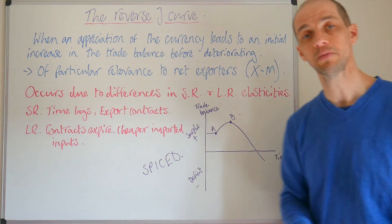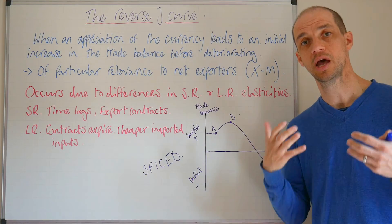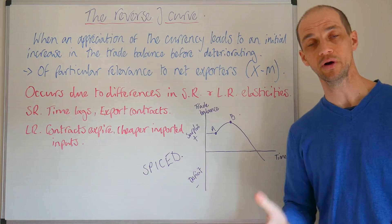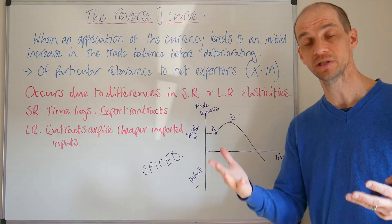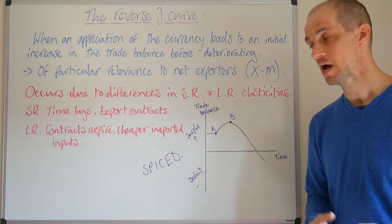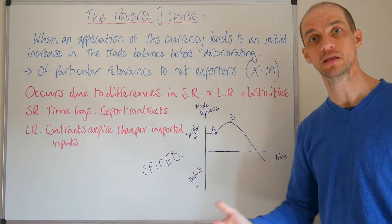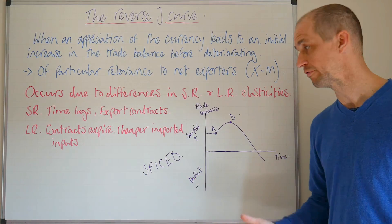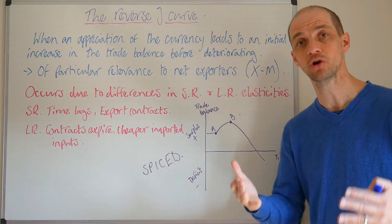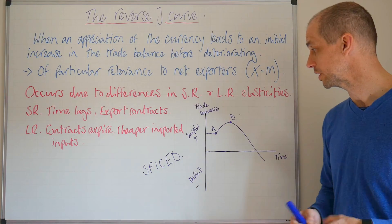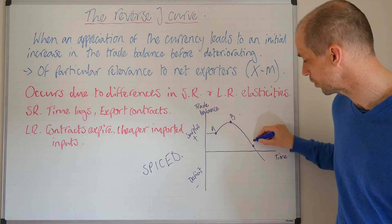So why would this initial improvement happen? Well, initially people might not understand the actual price implications. They might not actually have been able to find a cheaper supplier in the short term. Moreover, there might have been export contracts which have already been negotiated and signed, and thus there must be actual delivery of those export contracts which must come through. So as such there could be that big increase in the actual trade position before leading to this deterioration.